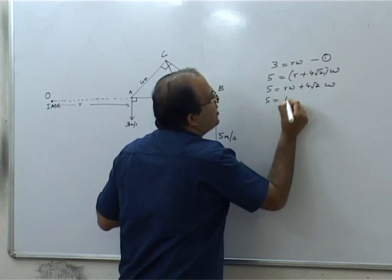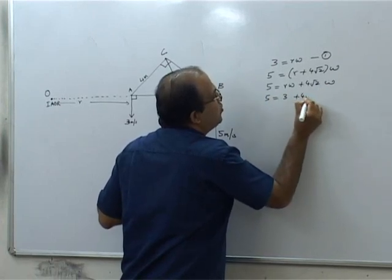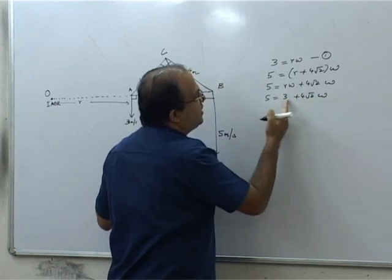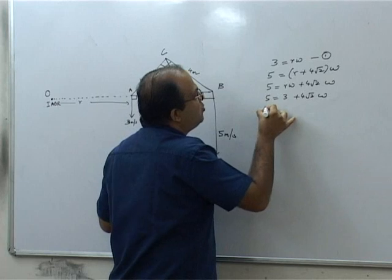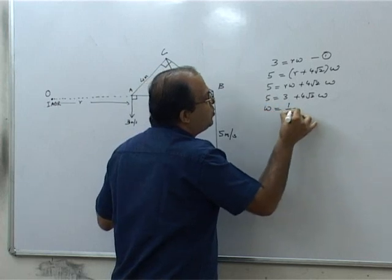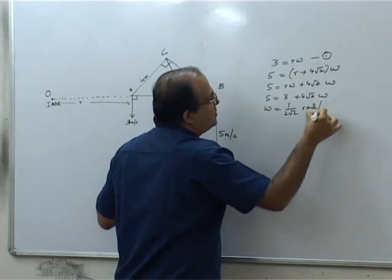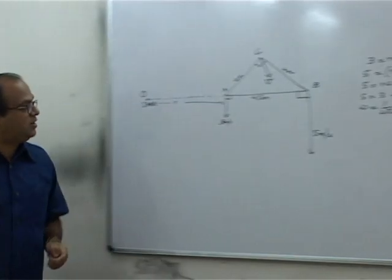5 becomes Rω is 3, plus 4√2 times ω. So if you take this side, you get 2. 2 by 4√2 is 1 by 2√2, so ω is 1/(2√2) radians per second. So that is the angular velocity of this plate.